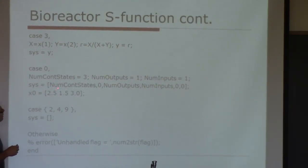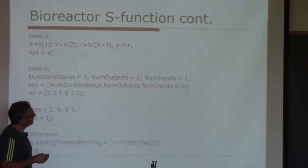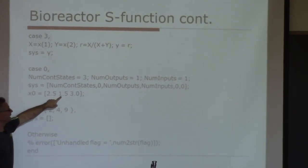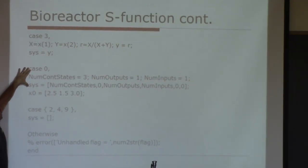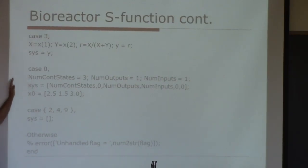In the sys vector: number of continuous states, number of discrete states (which we don't have, so zero), number of outputs, number of inputs, and then other things related to discrete states that we don't use. You also specify the initial condition. Because you have three state variables, you need three initial conditions — for x1, x2, and x3. If you were writing code for a different problem, you'd just specify the number of states, outputs, and inputs, use this same command, and put in your initial conditions.